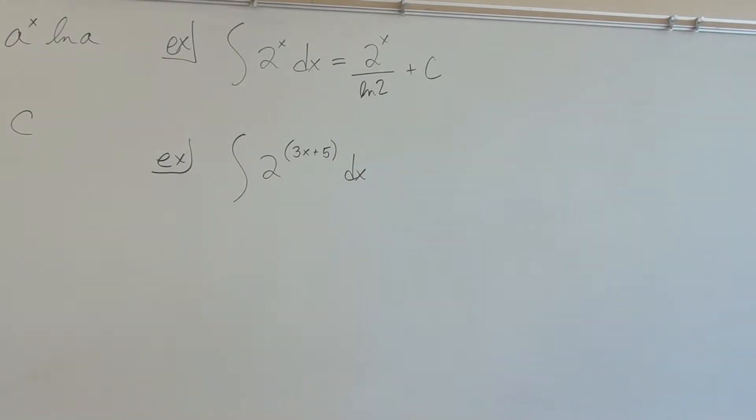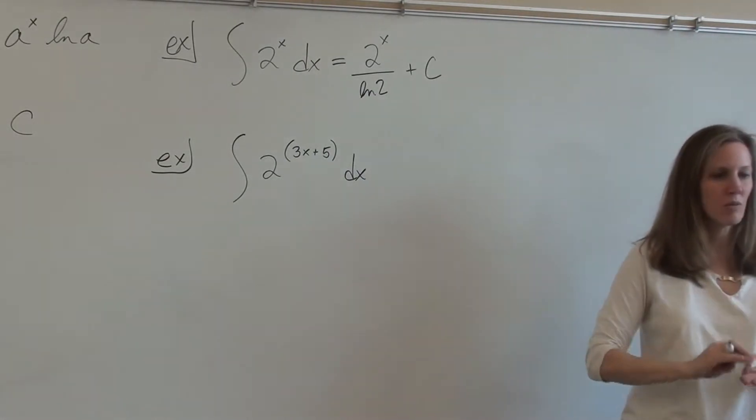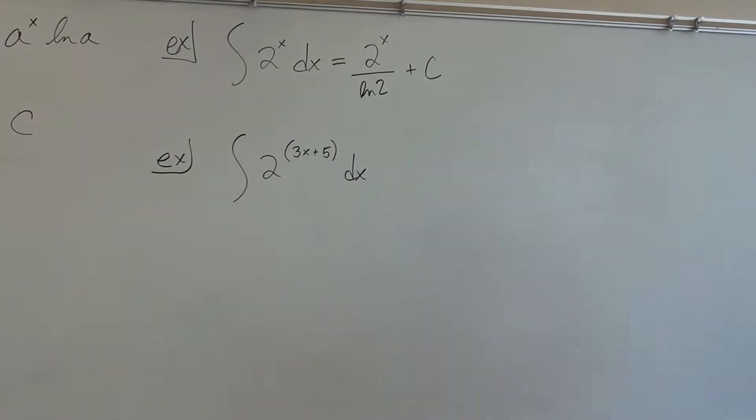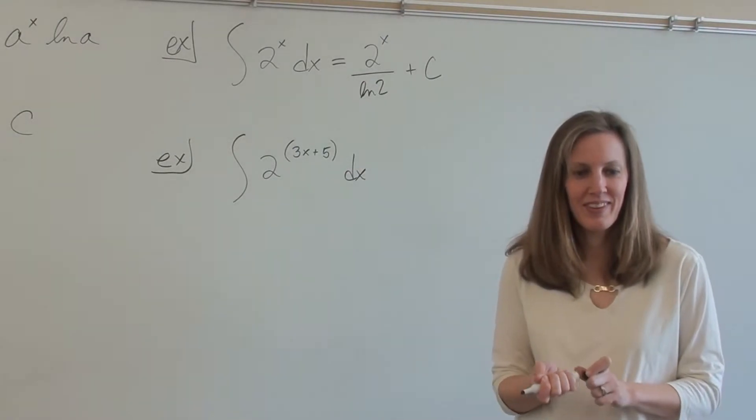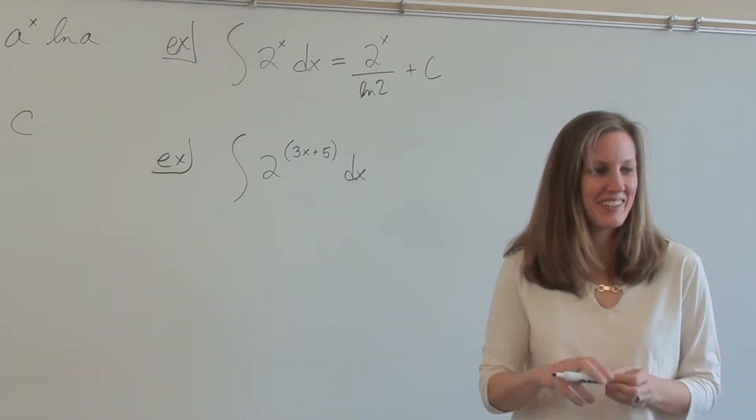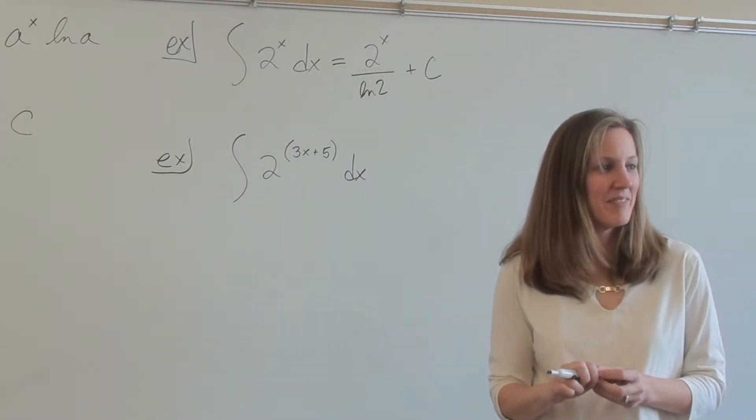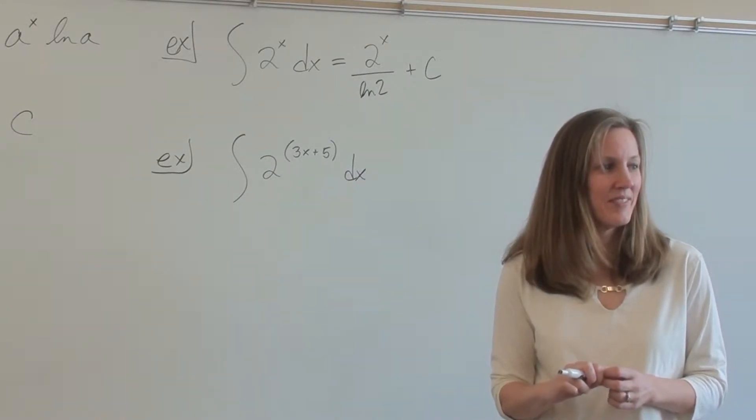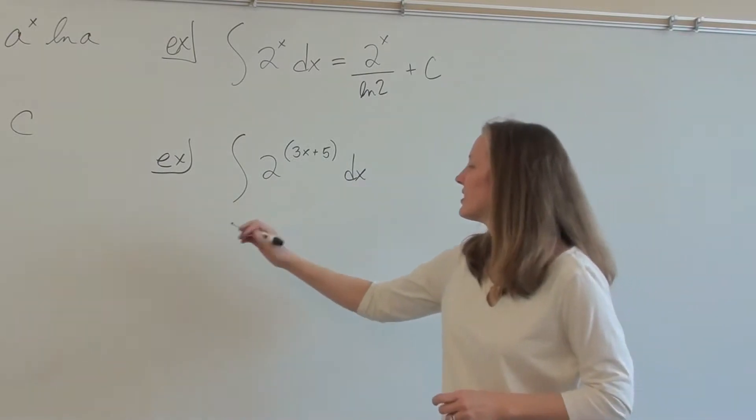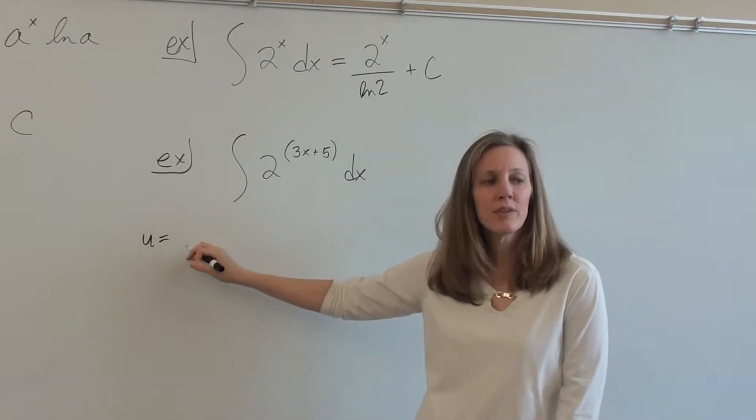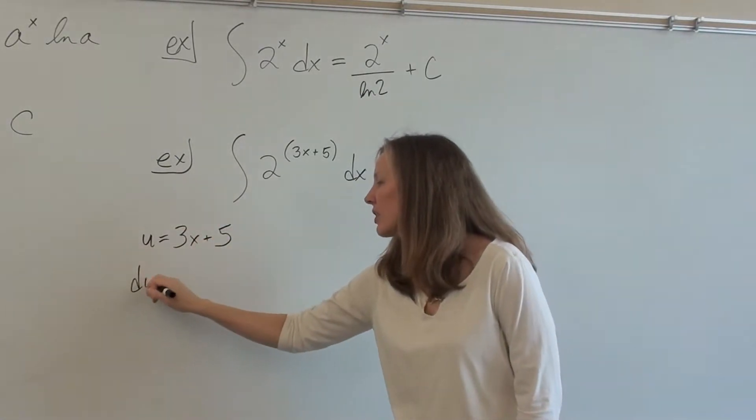Alright, this is just like e to the x. If your exponent is not just x, then that's usually your u. So see if you can find your u and your du and rewrite your integral and find your antiderivative. On paper. Alright, so what's u? 3x plus 5. What is u? Just the 3x plus 5. Okay, yeah, that could happen. That's okay. Alright.